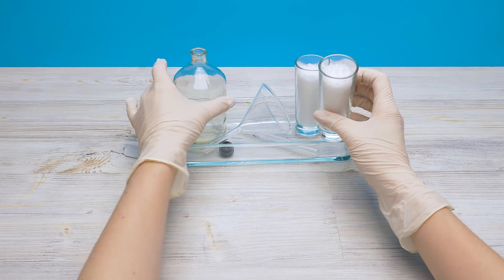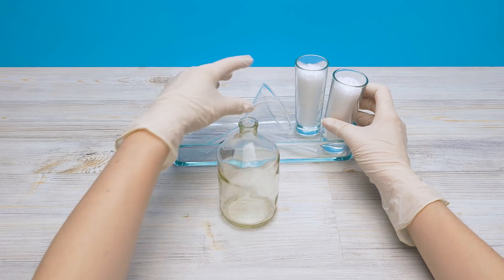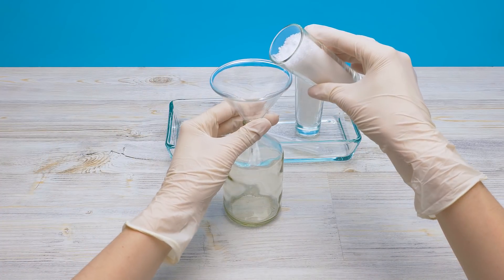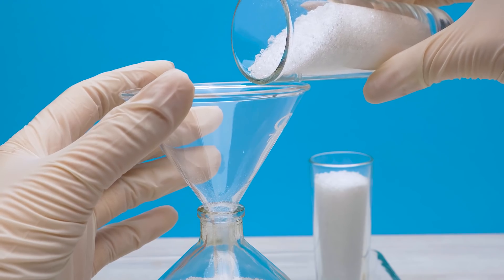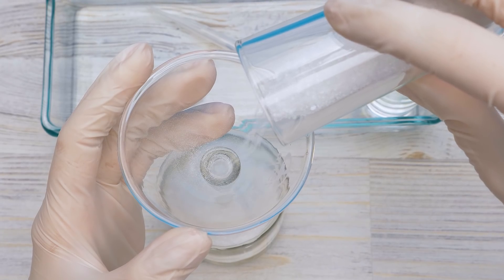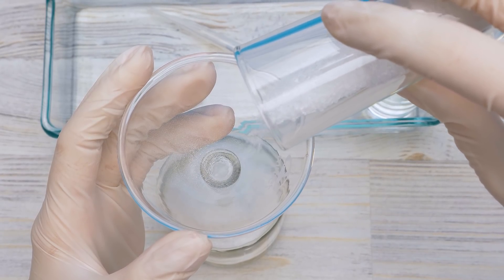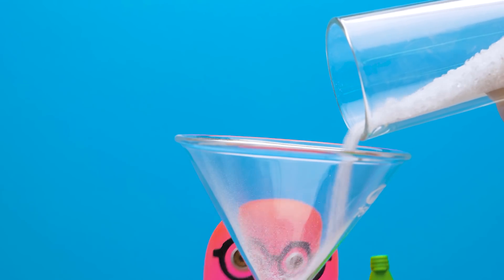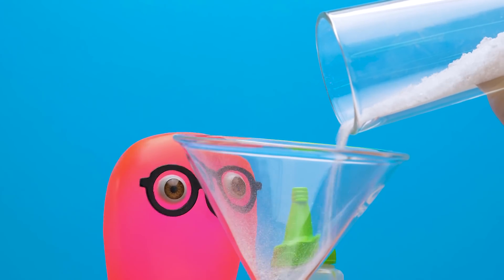We'll start with the main ingredient, sodium acetate. I have this glass bottle and I'll pour the substance in. Like this, very carefully. I need to make sure nothing sticks to the bottleneck. We need to leave a few crystals. We'll need them later.